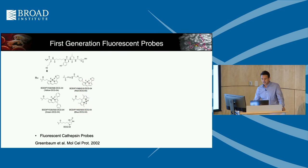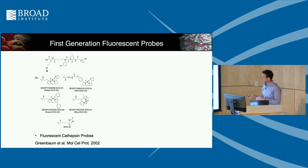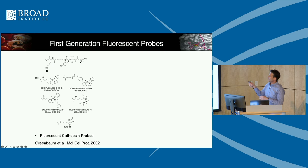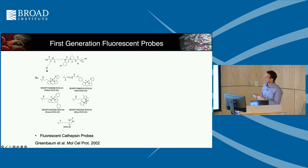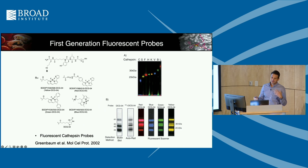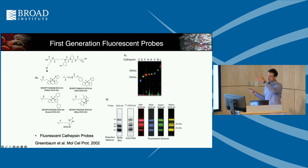We started targeting these cathepsins. Initially in the early 2000s at UCSF we worked on epoxide-based compounds, based on a natural product called E64. What happens is the thiolate from the active site opens up that ring and you get a very stable thioether linkage between the molecule and the active site. We then smartened up and decided to put on fluorophores using Bodipy-based dyes, generating fluorescent images rather than radio-labeled images.